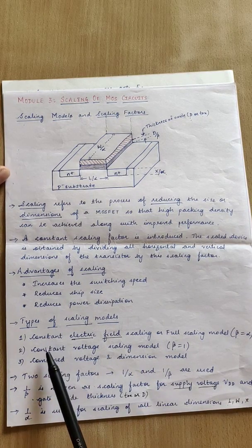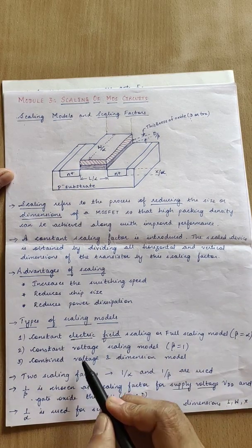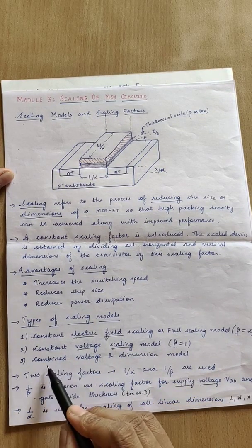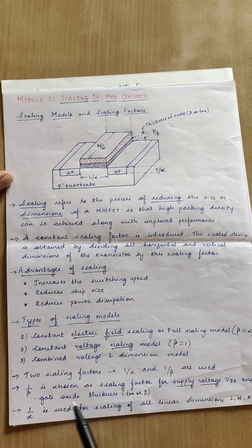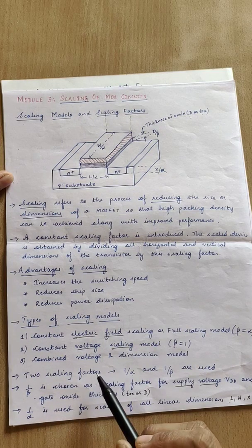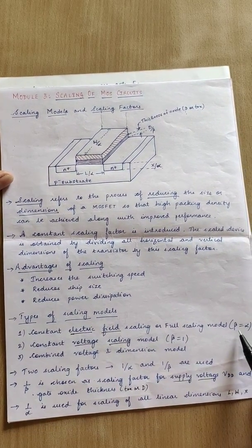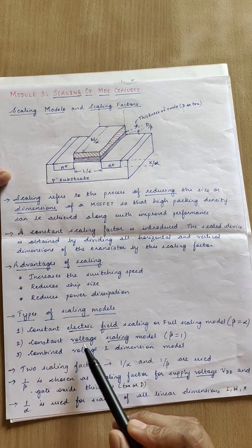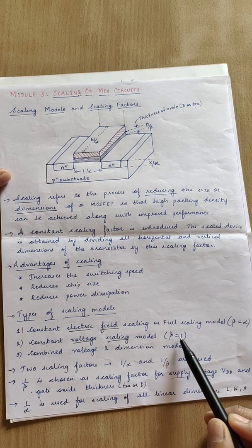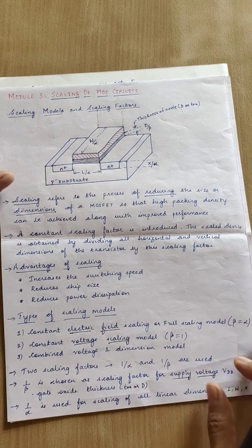Based on this understanding we have three types of scaling models: the first is the Constant Electric Field scaling model, also known as the Full Scaling model; the second is the Constant Voltage model; and the third is the Combined Voltage and Dimension model. We normally apply the Combined model, and for the other two we make substitutions: in the Constant Electric Field model, any β term is substituted by α; in the Constant Voltage model, any β term is substituted by 1.